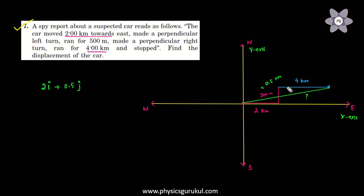And then again along positive x-axis, how many kilometers? 4 kilometers. So 4 i-cap. So this equals 6 i-cap plus 0.5 j-cap.